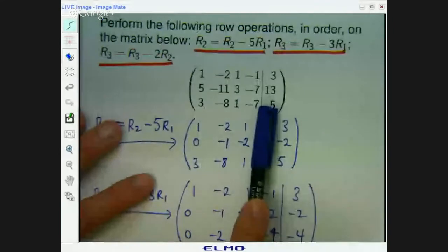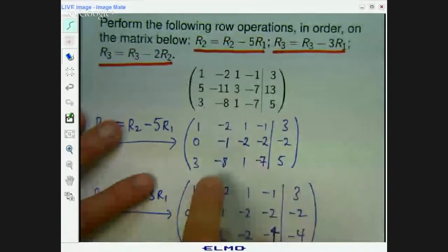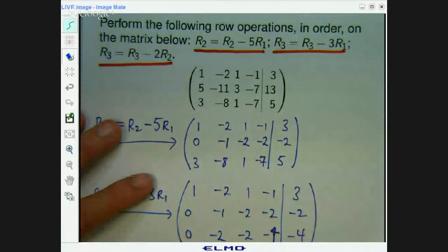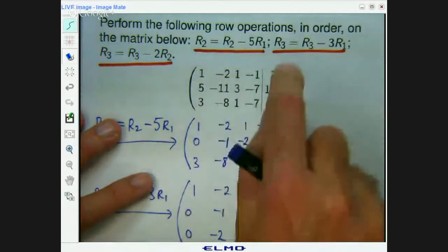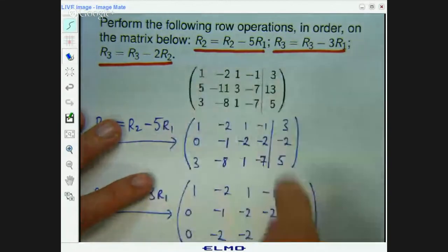We started with this and if this is an augmented matrix for a linear system, let's say the unknowns are x, y, z, and w. So the first row would represent 1x minus 2y plus 1z minus 1w equals 3 and so on.